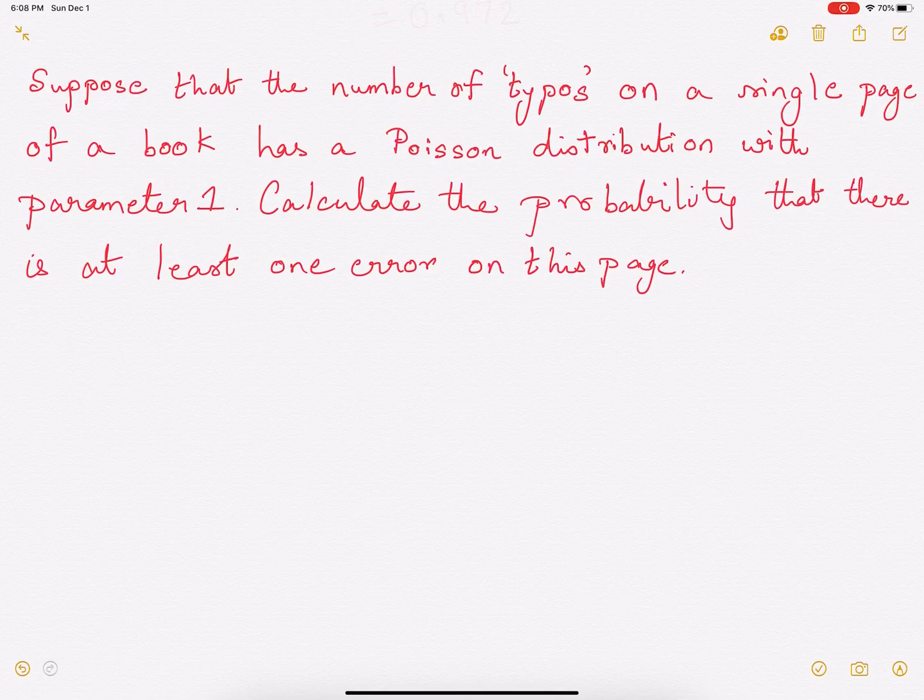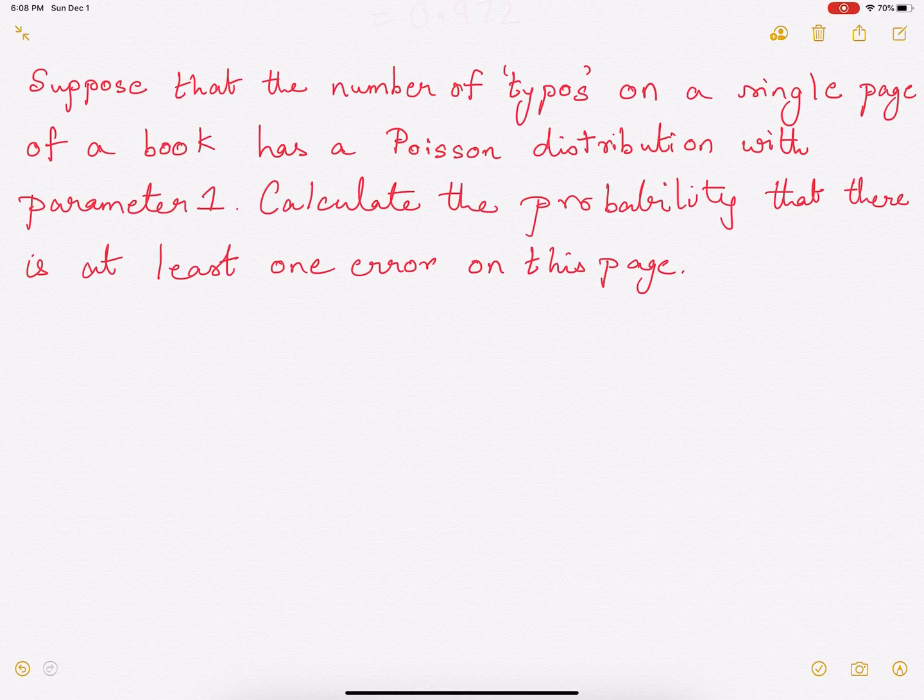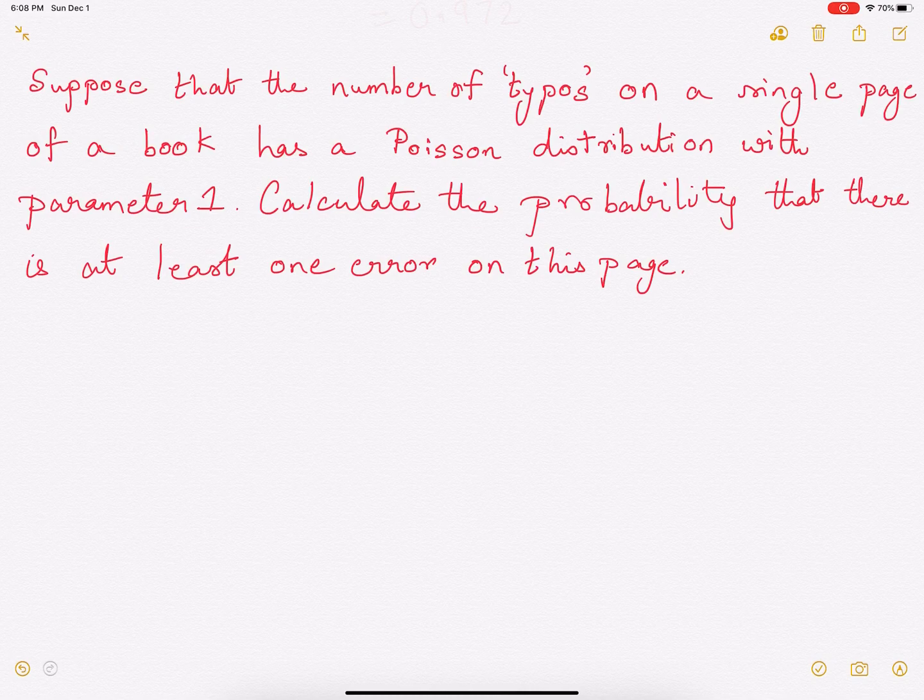Hi everyone, in this video we'll look at a simple example to understand Poisson distribution. Let us assume that the number of typographical errors or typos on a single page of a book has a Poisson distribution with parameter 1.